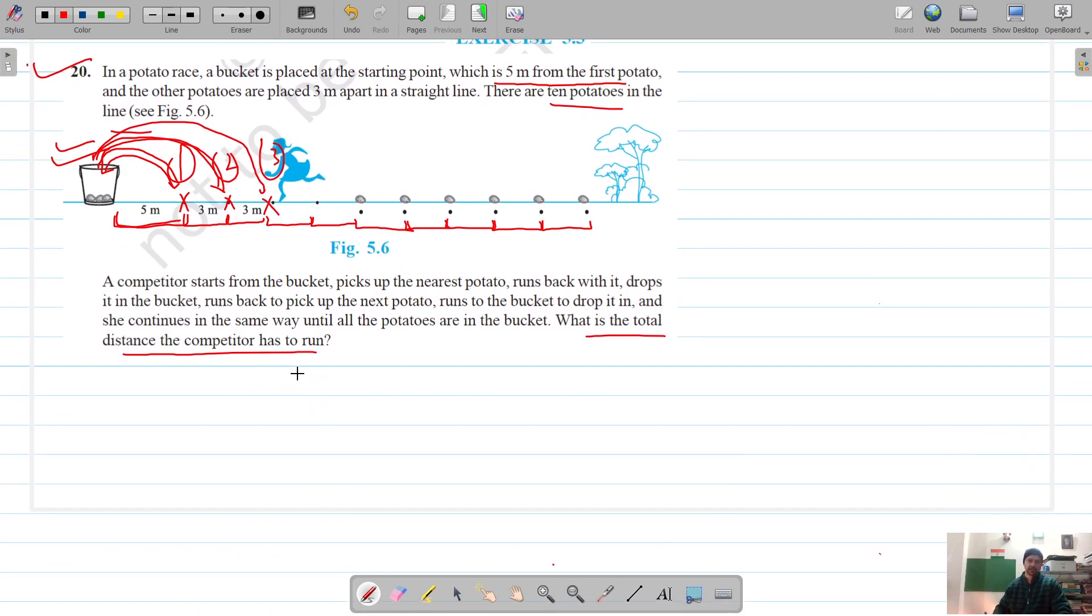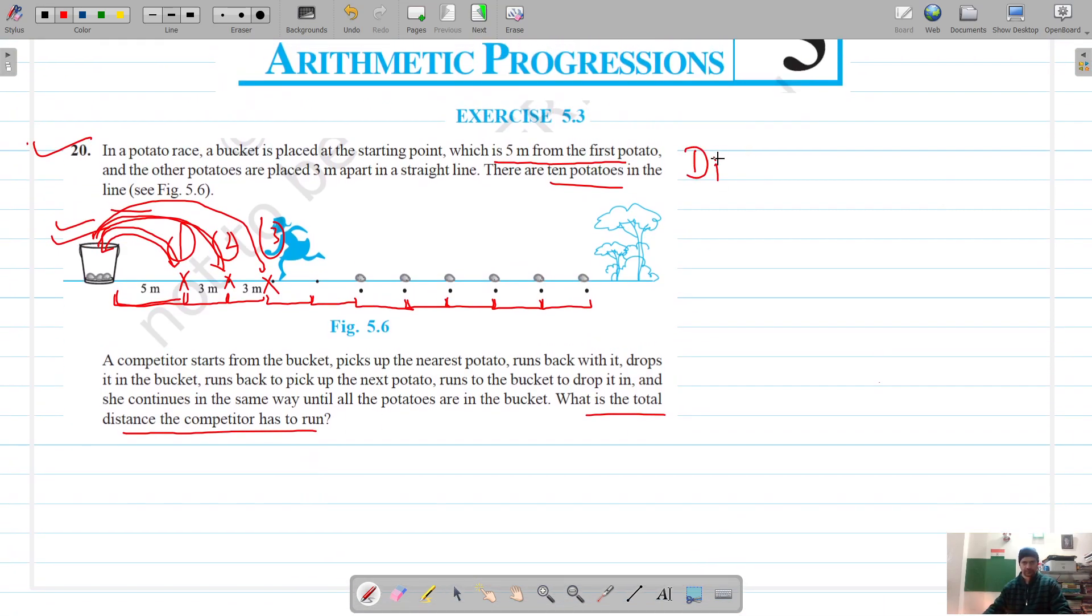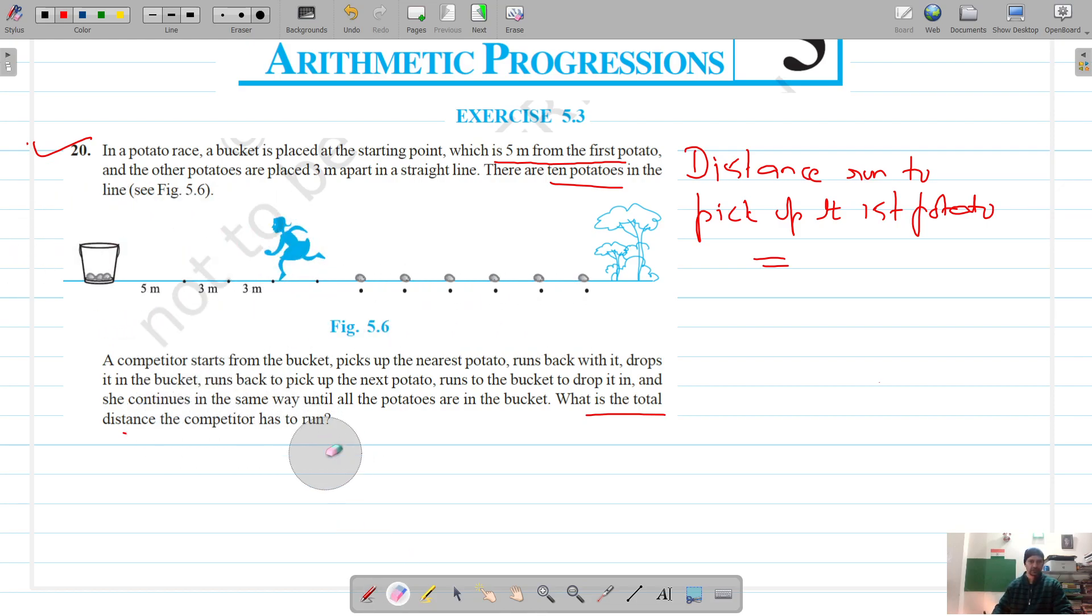Let's check this. The distance run to pick up the first potato - to pick up the first potato means she has to go initially 5 meters and then come back to put the potato in the bucket. So it's 5 plus 5 is 10 meters.